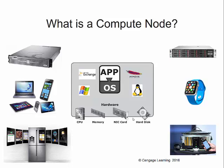Lots of devices nowadays meet this definition of a compute node. Look at our mobile devices — our phones and tablets are really just compute nodes. An iPhone is really just a computer that you can happen to make phone calls on. Same with Samsung devices, tablets, and so on. What about a smart watch? Absolutely a compute node — chassis, processor, RAM, some type of storage, probably flash or solid-state storage, and a network interface such as Wi-Fi or Bluetooth.